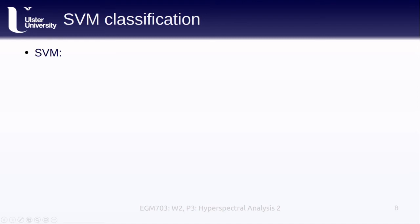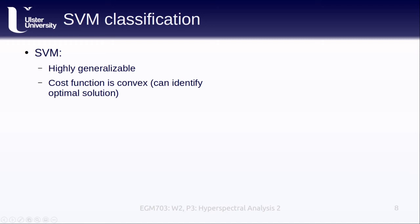Like other machine learning methods, support vector machines are an ideal method for analyzing hyperspectral data. They're highly generalizable, meaning that they're flexible and adapt to many applications. The cost function, which is how we actually find the hyperplane, is convex — meaning that we can identify an optimal solution, which is something we want because it means we can actually solve the problem. Support vector machines are also well-suited to ill-posed problems, which most hyperspectral classification applications are. A well-posed problem is one where a solution exists, the solution is unique, and the solution is stable. Ill-posed problems, on the other hand, violate at least one of those conditions — the solution may not exist, there may be many solutions, or the solutions may be unstable, with changes in initial conditions changing the results in unpredictable ways.